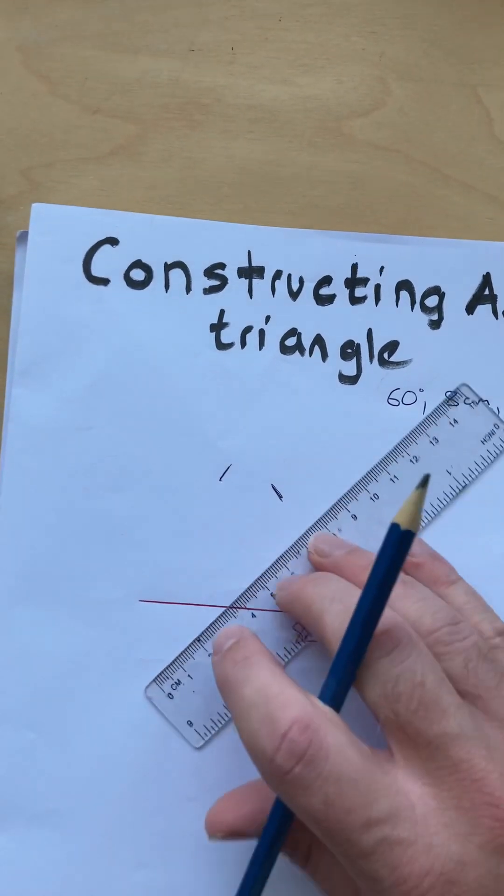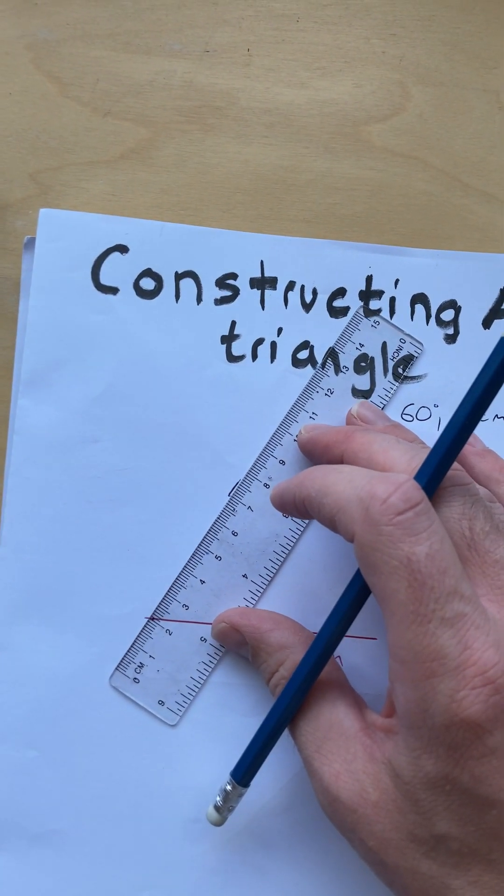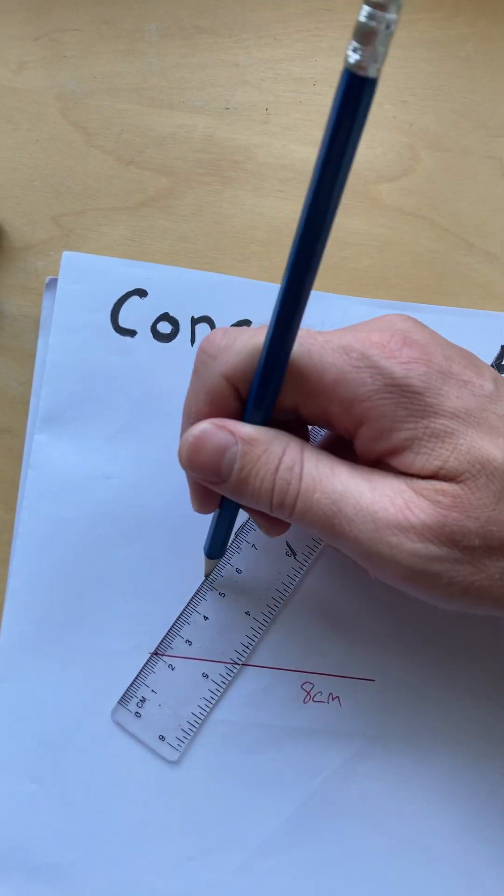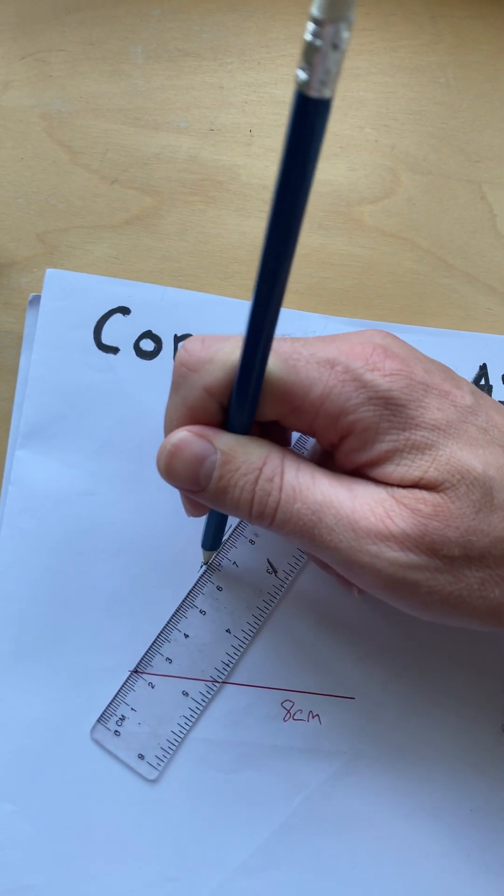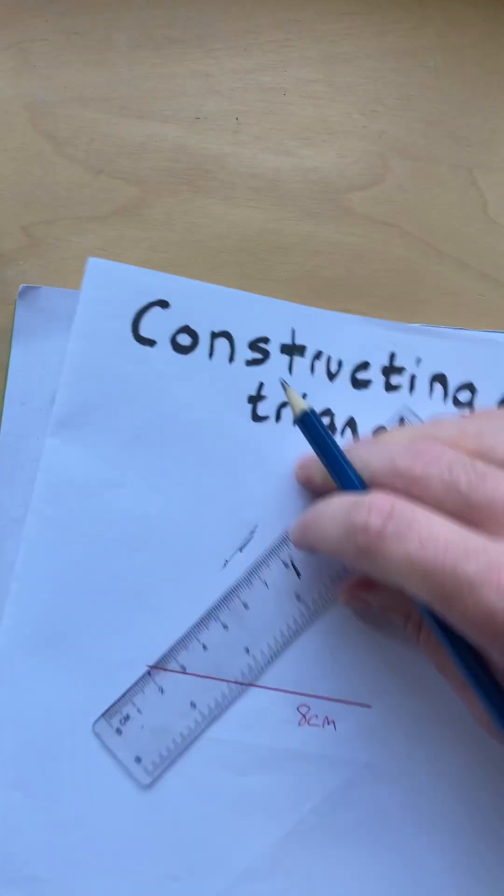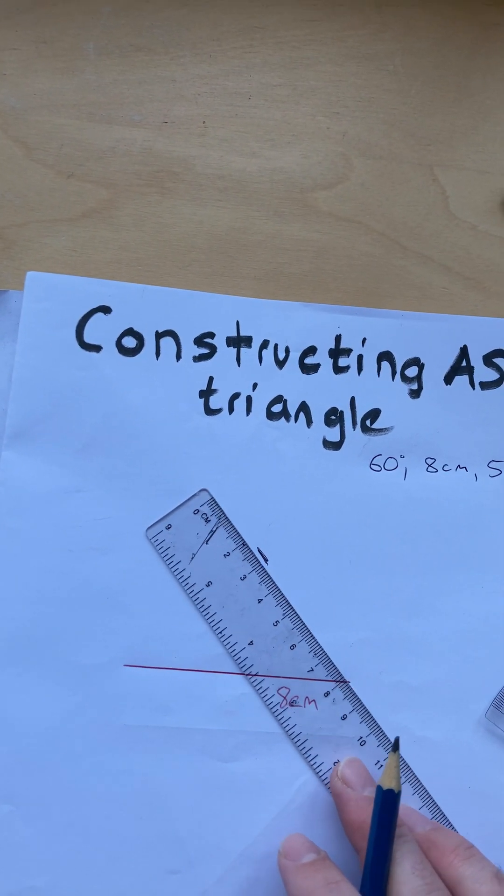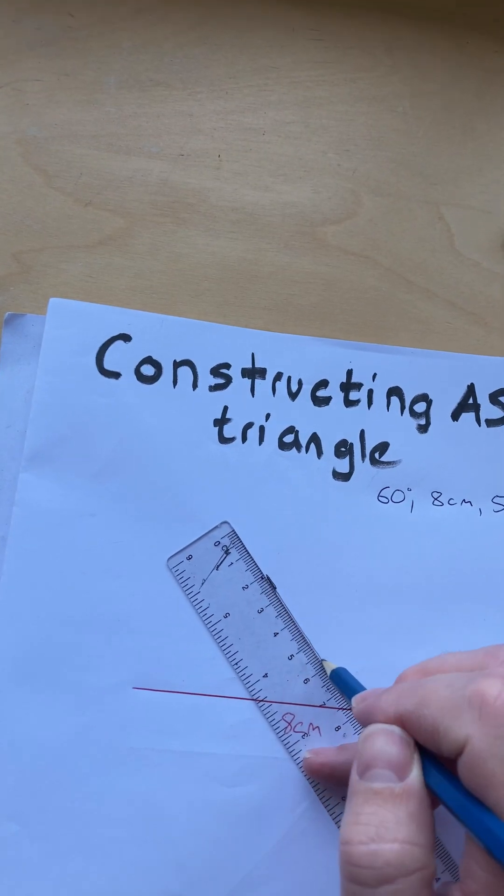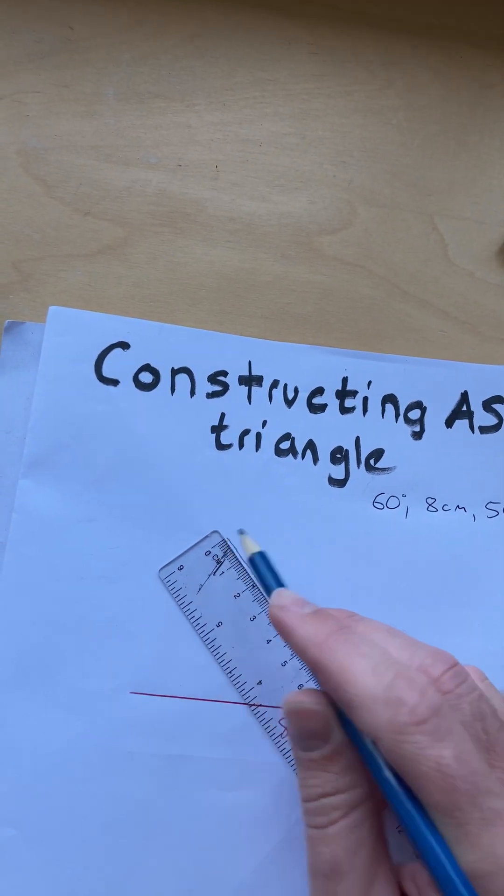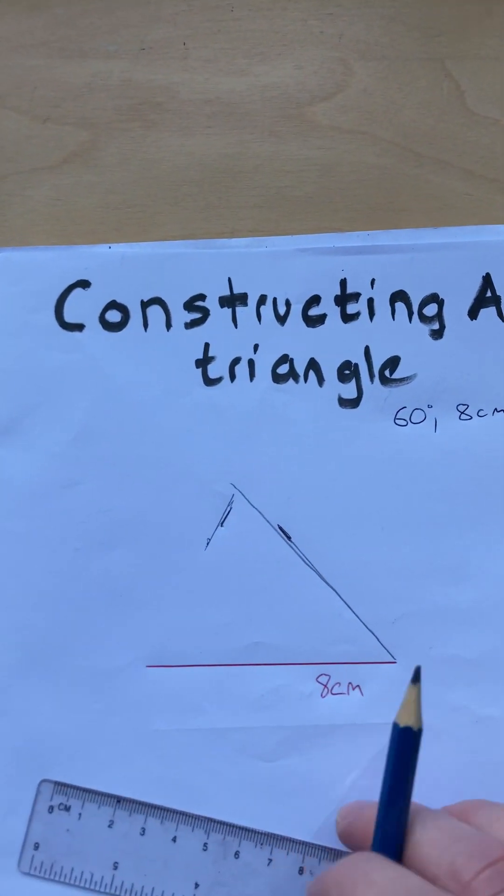Then take your ruler and your pencil and measure a line going up along there. And similarly for this side, along that line of 50 degrees. And where those meet will be your triangle.